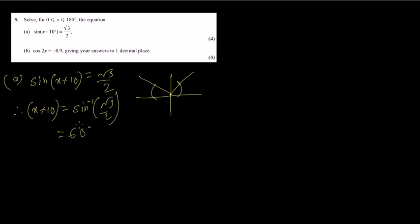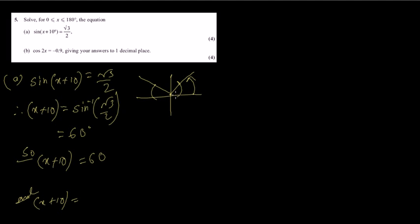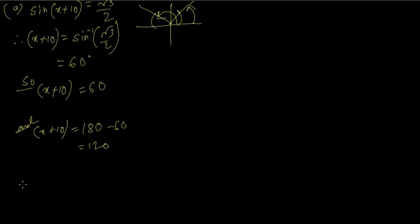Do not break this — do not send 10 to the other side. This is your basic angle, you cannot break it. So x plus 10 equals 60 degrees (first quadrant), and x plus 10 equals 180 minus 60 equals 120 degrees (second quadrant). Now find x: x equals 60 minus 10 equals 50, and x equals 120 minus 10 equals 110. The degree symbol is fine either way.